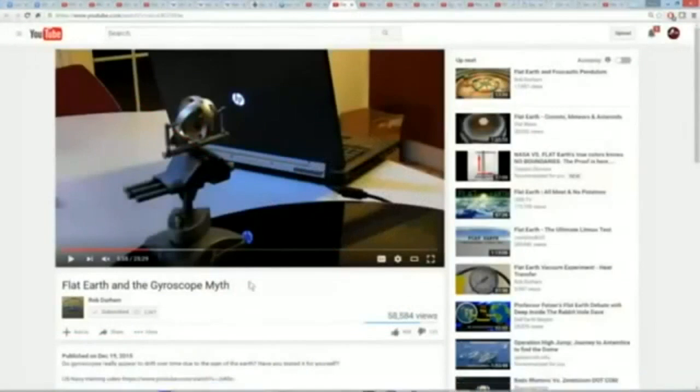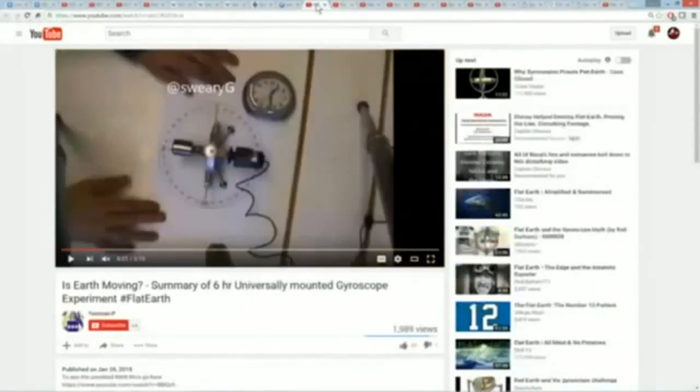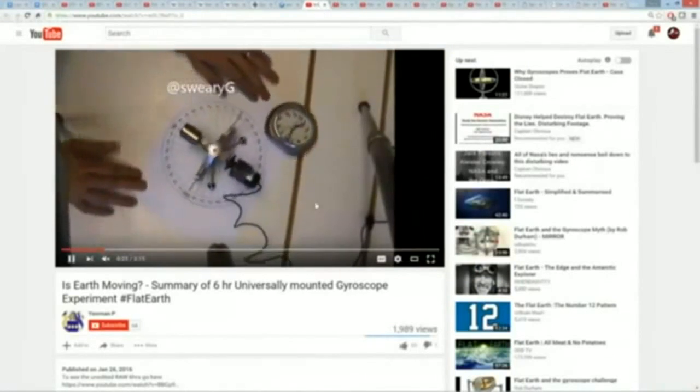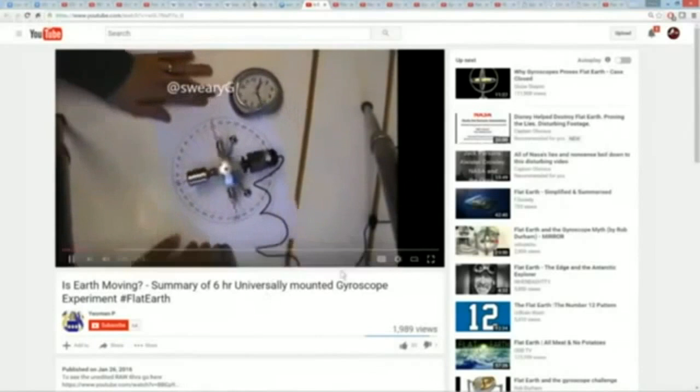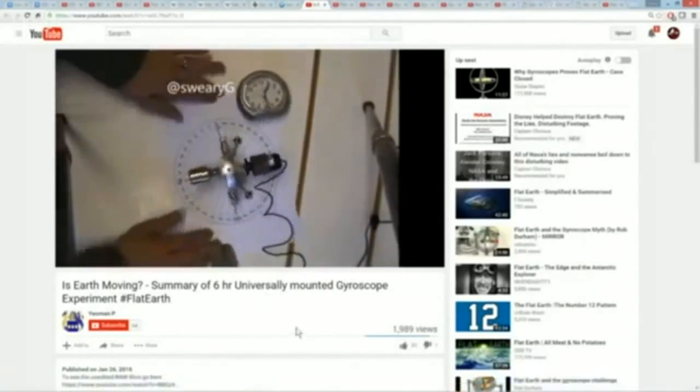A good example: Rob Durham bought an extremely high precision gyroscope, did the precession test. Guess what? And he had calculated the precession based on his latitude and of course the gyroscope did not move at all. There's another guy, Yeoman P, that here's his video where he let it run for six hours and it detected absolutely zero motion.